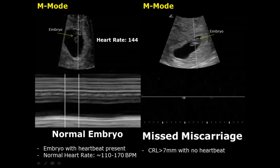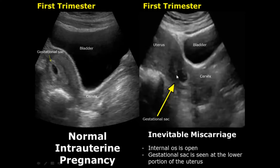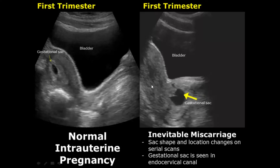We must wait and watch as it can recover on further scans. In an inevitable miscarriage, the internal os is open and the gestational sac is seen at the lower portion of the uterus. In this image, you can see a change in the shape and location of the gestational sac — on repeated scans, the gestational sac can be seen changing its position and moving downwards, also changing its shape.